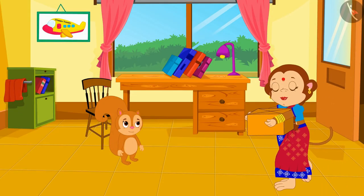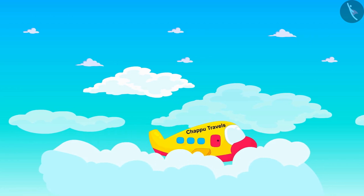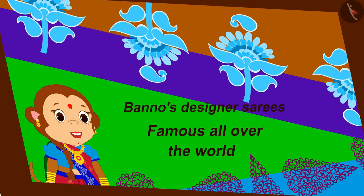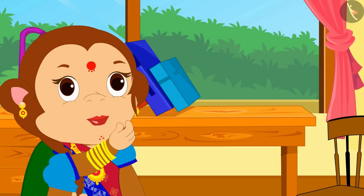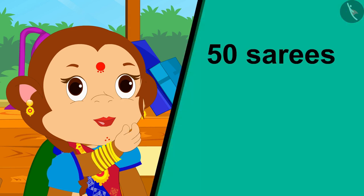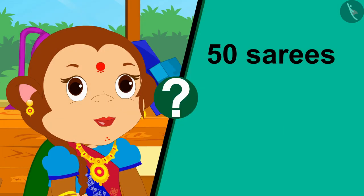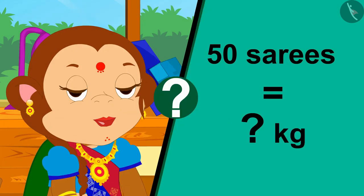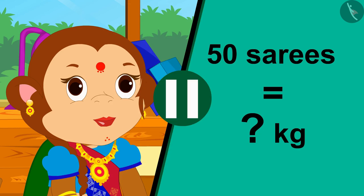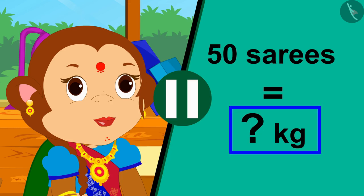In this way, Banno will be able to send ten saris in a five kilogram parcel. Banno put ten saris in a box and sent them overseas through Chapu Travels. Banno's saris became very famous even abroad! Now Banno is thinking that she will send fifty saris abroad this time. Children, can you tell how many kilograms the total weight of these fifty saris will be? If you want, you can stop the video and think about the answer.